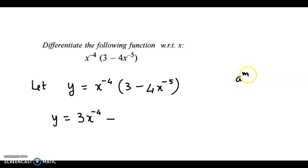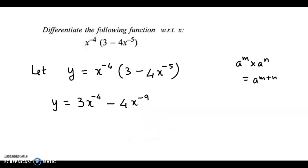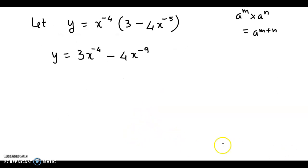We apply the rule for indices: a^m times a^n equals a^(m+n). So here we have 4x^(-4-5), which is 4x^(-9). So y = 3x^(-4) - 4x^(-9). Now we can differentiate the function with respect to x.